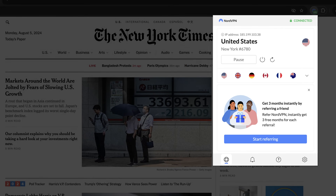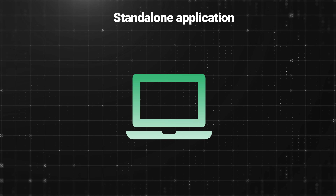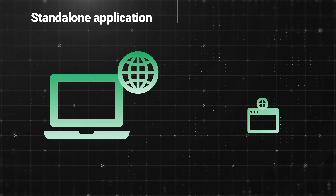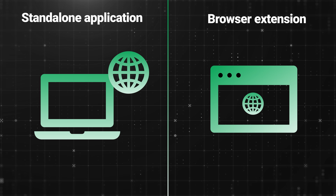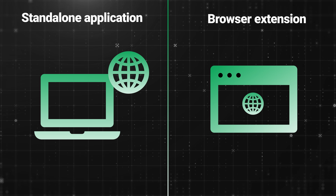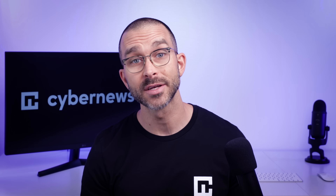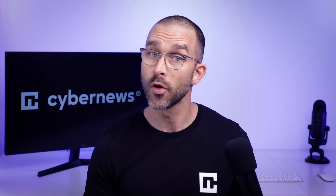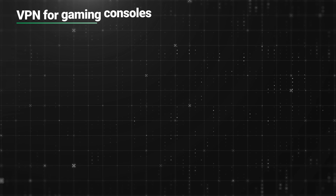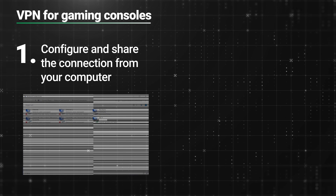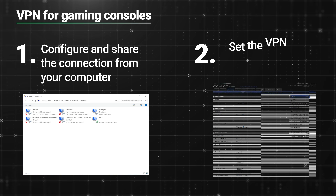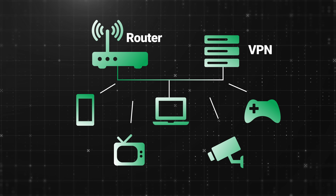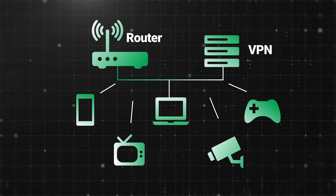Some VPNs have browser extensions as well. While the app-based versions protect the entire internet traffic of your device, a browser extension only secures what you do on that specific browser. You can also get a VPN connection to cover other electronic devices, like gaming consoles, though that can get a bit tricky. You either have to configure and share the connection from your computer or set up the VPN on your internet router. In this case, every internet-using device in your house would be under VPN protection.